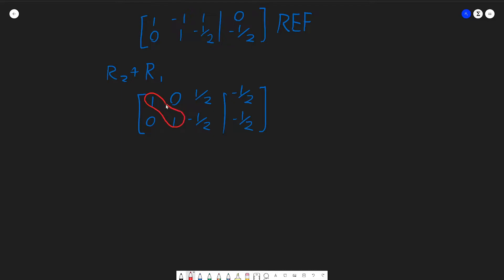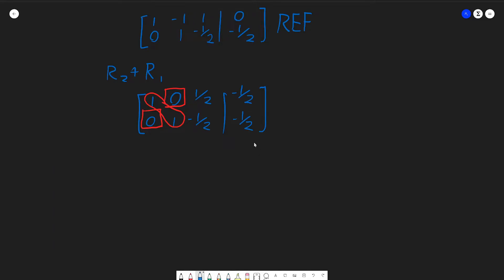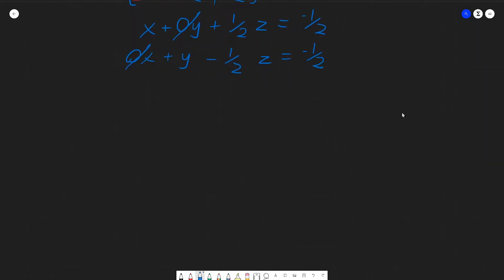We have a main diagonal of only ones or zeros. Under the main diagonal we have all zeros, and above the main diagonal we have just zeros. Notice this one half here is not counted as above the main diagonal because the main diagonal only encompasses the first two columns. How do we describe this solution set? It might be helpful to write these out as equations. The first row says x plus 1 half z equals negative 1 half. The second row says y minus 1 half z equals negative 1 half. We could rewrite this as x equals negative 1 half minus 1 half z, and y equals negative 1 half plus 1 half z.